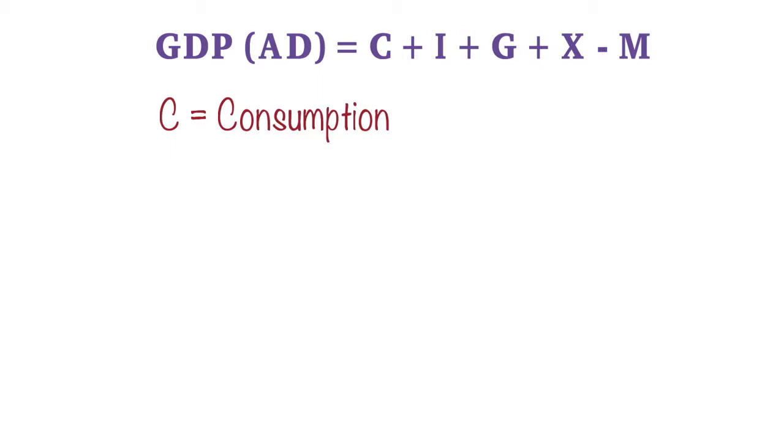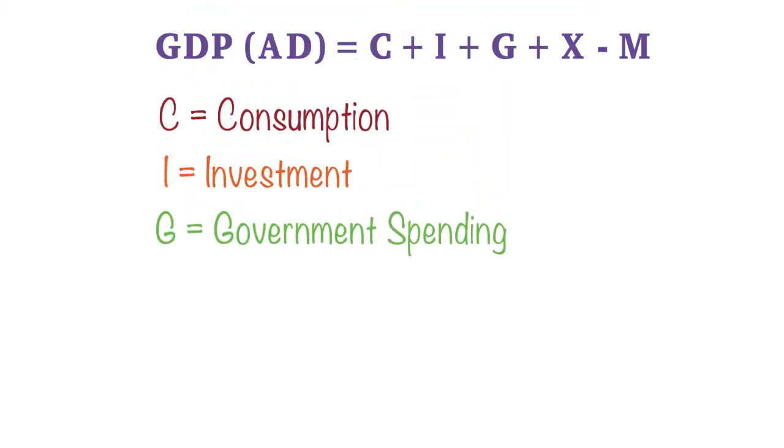We have government spending as well, so this is spending by the government on goods and services, and these can include infrastructure projects like road projects, hospitals, schools, etc. We also have in our spending exports, so these are the products that we export over to other countries and they pay for these. So that's money that comes into our country and we add this on to our expenditure approach.